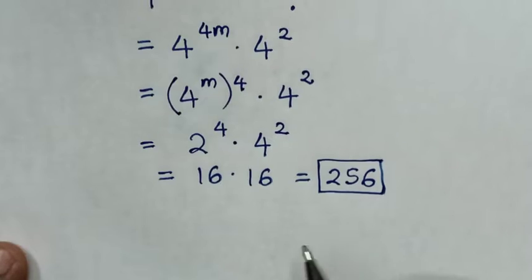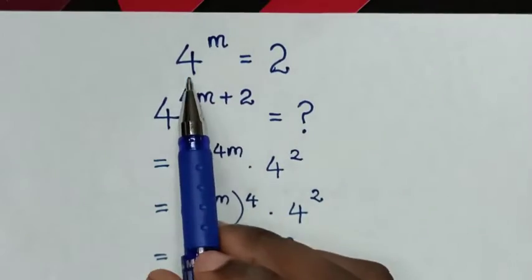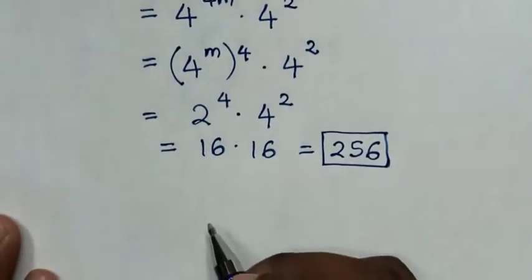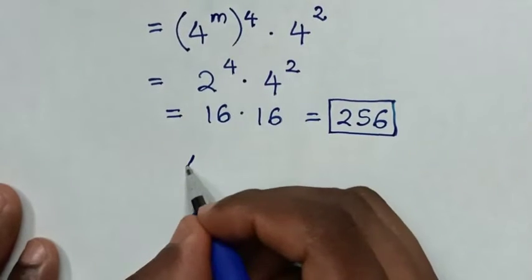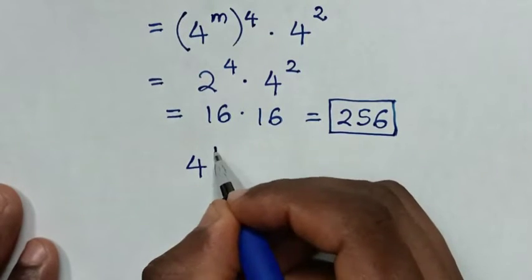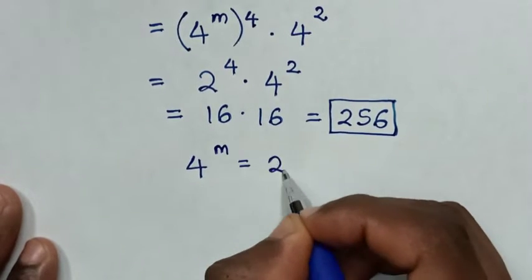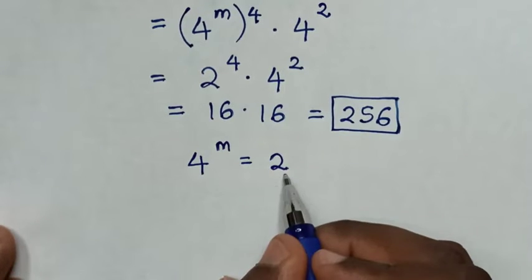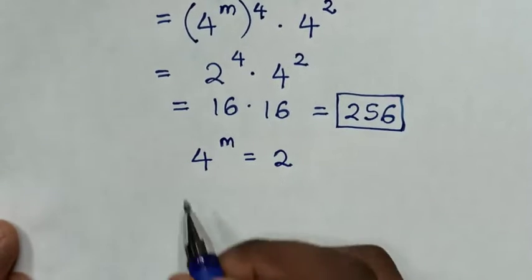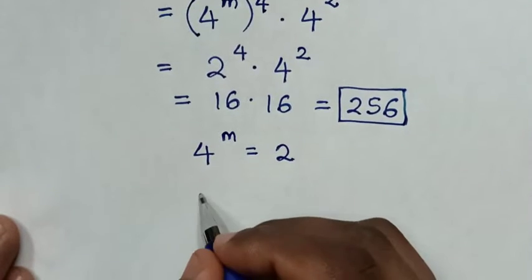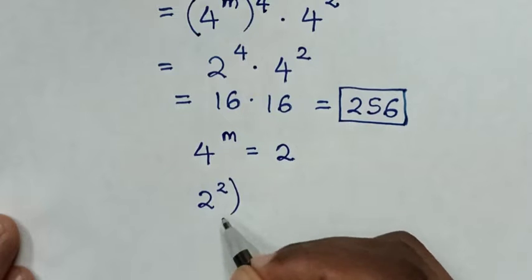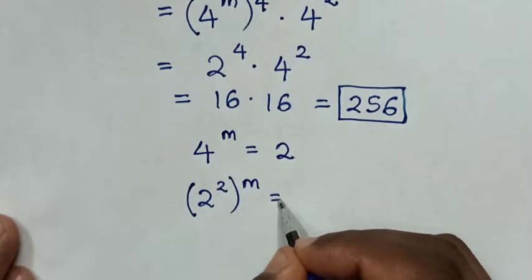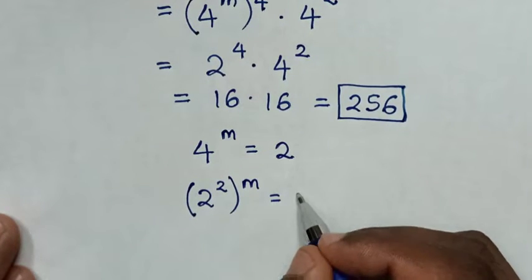Or, to solve in another method: from 4 power of m is equal to 2, we make this 4 have the same base as 2. So 4 is the same as 2 power of 2, then bracket power of m is equal to 2.